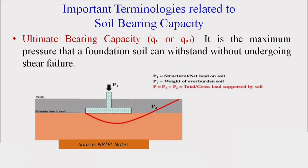The first important terminology is ultimate bearing capacity, designated as q_u. It is the maximum pressure that a foundation can withstand without undergoing shear failure. In this figure, the entire red color line indicates the shear failure line. P2 is the overburden pressure, P1 is the weight of the superstructure acting downward, so total pressure P = P1 + P2.